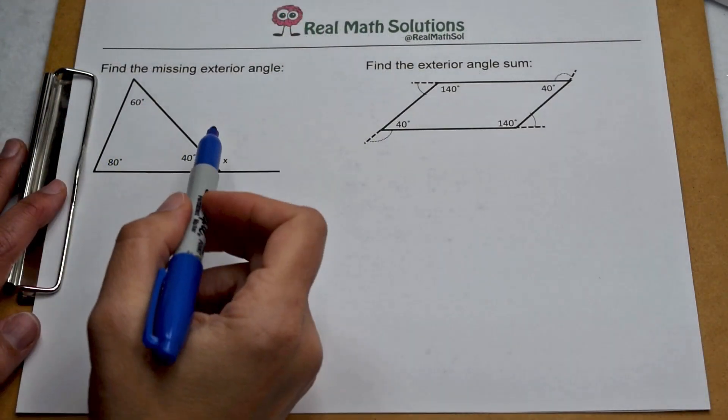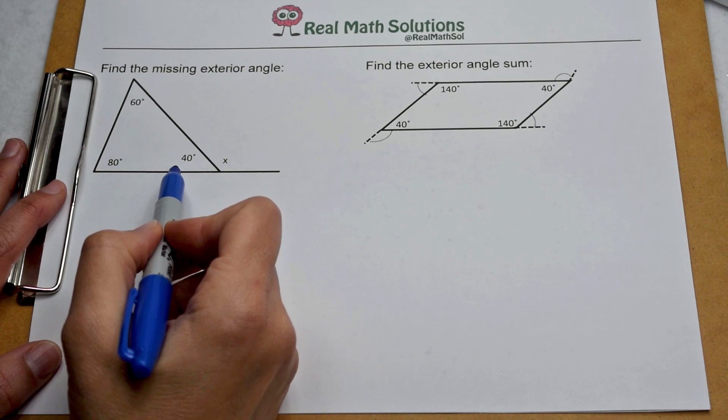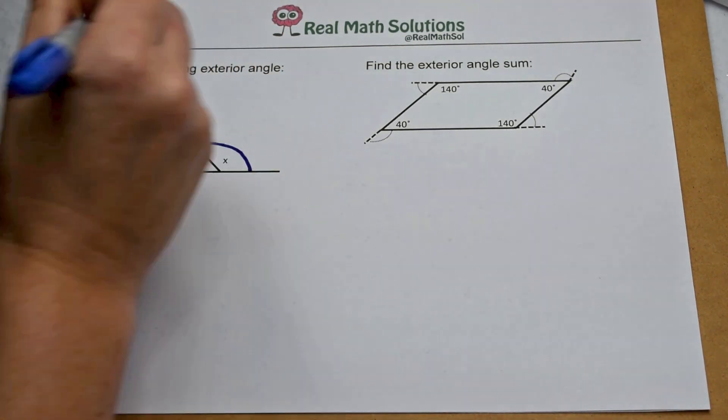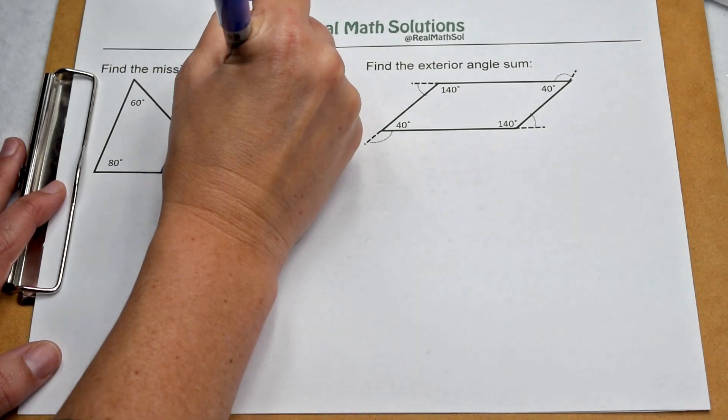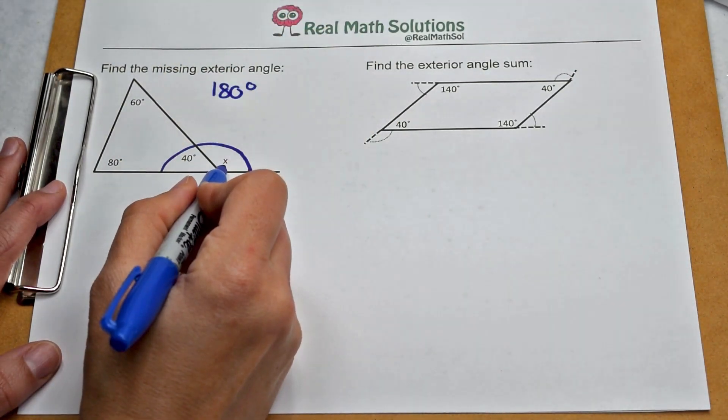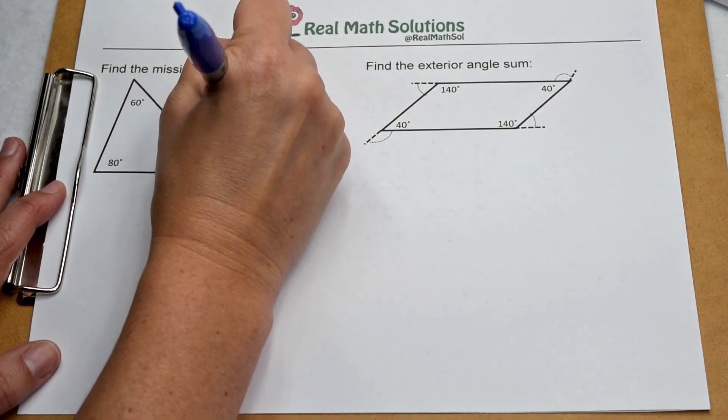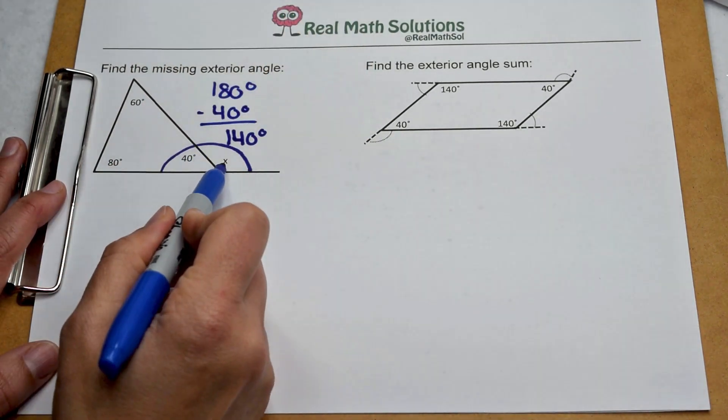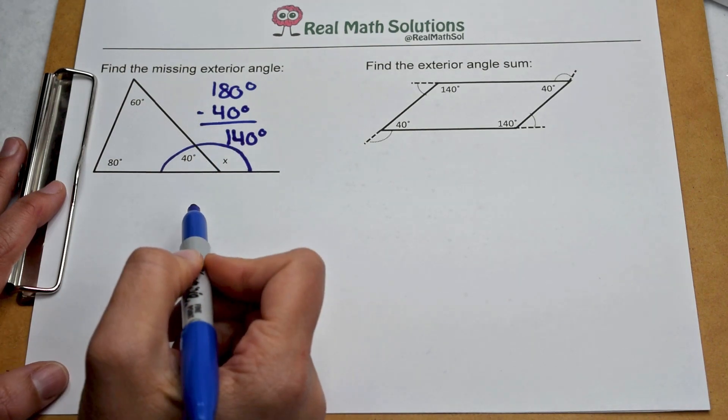Here we're going to work on finding exterior angles. We know that the interior angle and the exterior angle are supplementary. That means together they form a straight line and add up to 180 degrees. So to find our missing exterior angle, I can take 180 minus the 40 degree interior angle and come out with 140 degrees. So our missing exterior angle is worth 140 degrees.